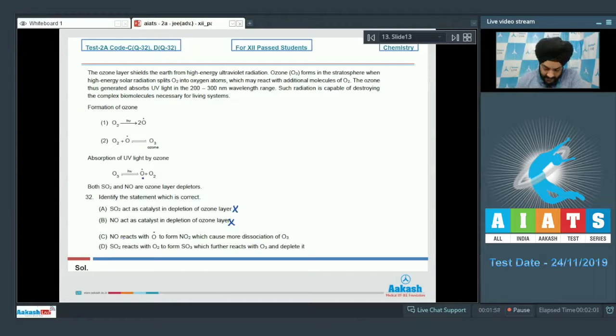The NO will react with the O atom which is formed, which will further shift this equilibrium in the forward direction. There is a depletion of ozone due to the reaction of NO with the oxygen atom indicated above. So the C statement is correct.